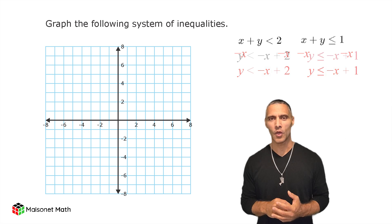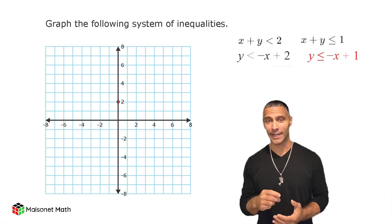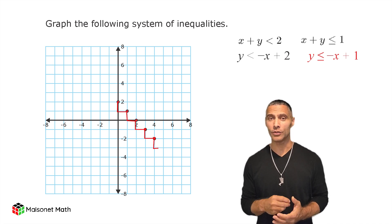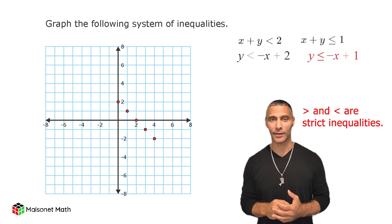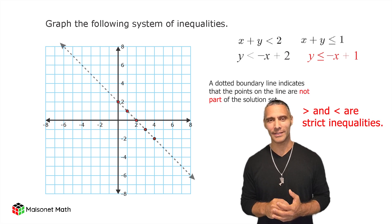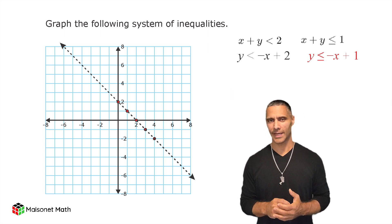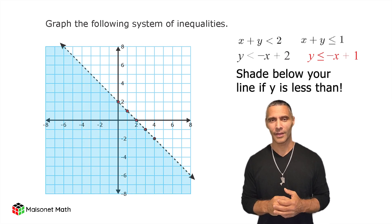All right, now let's graph the first inequality, y is less than negative x plus 2. The y-intercept is positive 2, so plot a point at positive 2 on the y-axis. Next, using the slope of negative 1, we move down 1 and right 1 repeatedly to plot additional points. Since the inequality is strict less than, meaning that we do not include values that are equal, the line will be dotted, meaning points on the line are not solutions. Because our statement begins with y is less than, we must shade the area below our line.